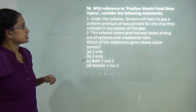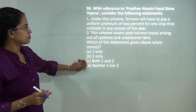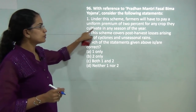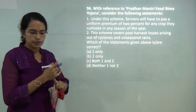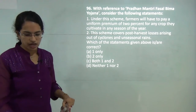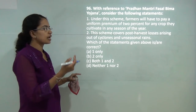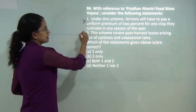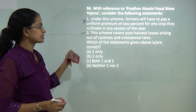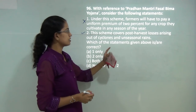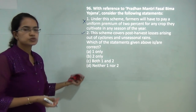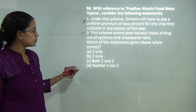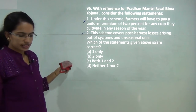The Pradhan Mantri Fasal Bima Yojana does not prescribe 2% for any crop across the board. It specifies 2% for Kharif crops, 1.5% for Rabi crops, and 5% for horticulture crops — so statement 1 is incorrect. However, statement 2 is correct: it covers post-harvest losses arising due to cyclones and unseasonal rain. So B only would be the correct answer.